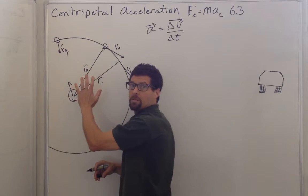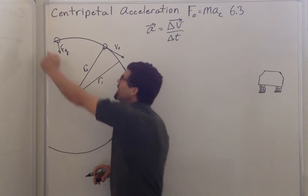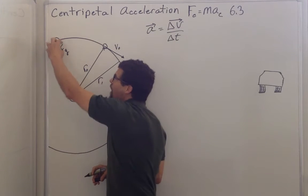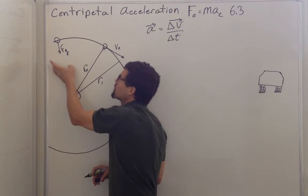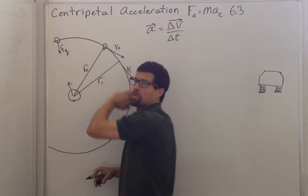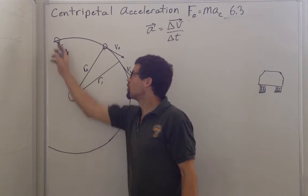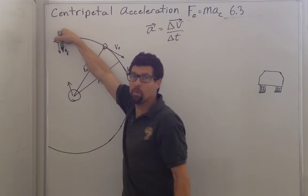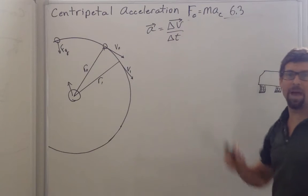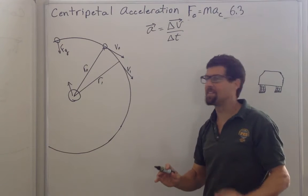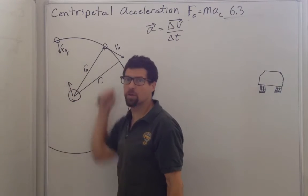If the moon weren't moving, it would accelerate directly into the earth and hit it. But it is moving — it's still falling, still accelerating into the earth, but the force of gravity accelerates it into a circular path. If it weren't for gravity directed radially inward on the moon, it would just continue in a uniform straight path at constant velocity. It is this force of gravity that pulls it into a circle.